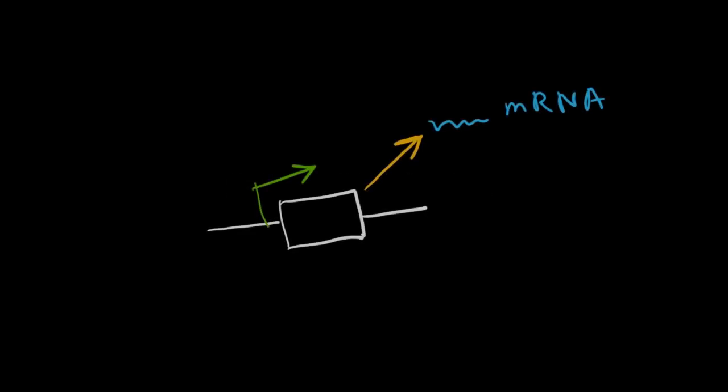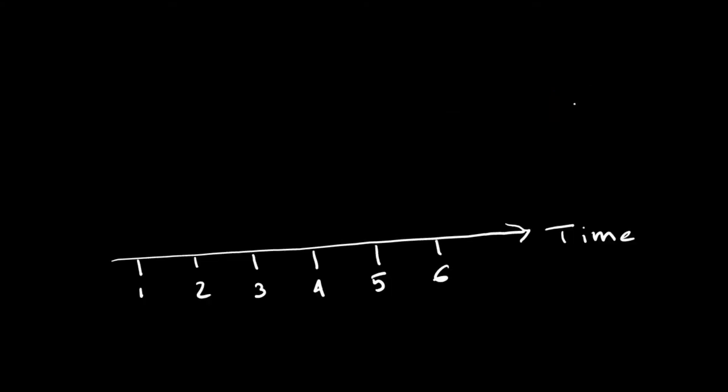In the video on binomial distribution, we imagined transcription as a coin toss. We discretize time, and at each time point a coin is tossed. If it is heads, we have a mRNA.